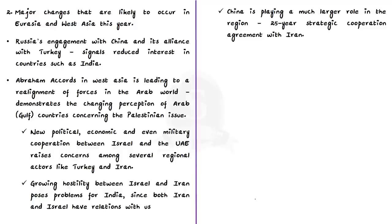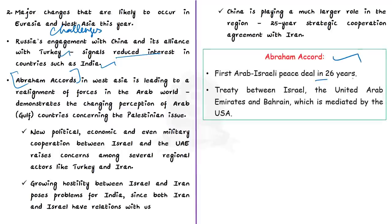The author talks about major challenges likely to occur in Eurasia and West Asia this year. Russia's engagement with China and its alliance with Turkey are signaling reduced interest in countries such as India. In West Asia, the Abraham Accords is leading to a realignment of forces in the Arab world. The Abraham Accords is the first Arab-Israeli peace deal in 26 years — a treaty between Israel, the United Arab Emirates and Bahrain, mediated by the United States. This normalization deal demonstrates the changing perception of Arab and Gulf countries with regard to the Palestinian issue.